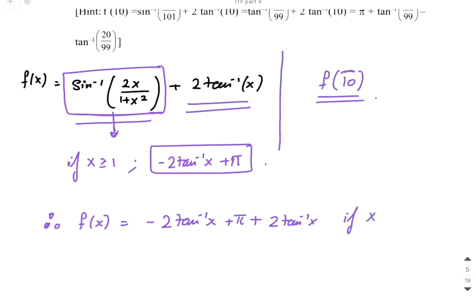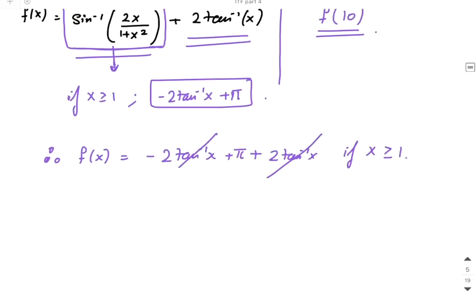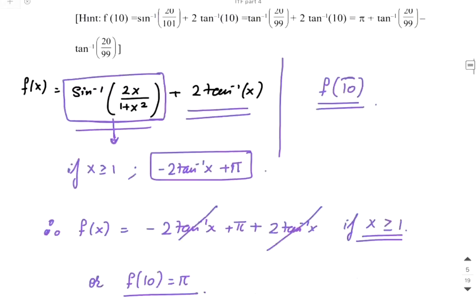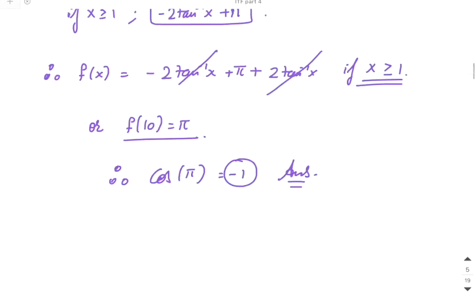If x is greater than or equal to 1, then the value of f(x) comes out to be π. So f(x) = π when x ≥ 1, and therefore f(10) = π as well.